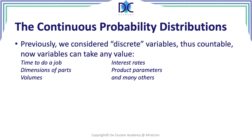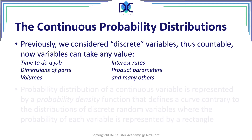For example, we have the time to do a job, dimension of parts, volumes, interest rates, product parameters, and many others. We encounter a lot of values that are basically continuous and that cannot be represented by the discrete probability distributions.